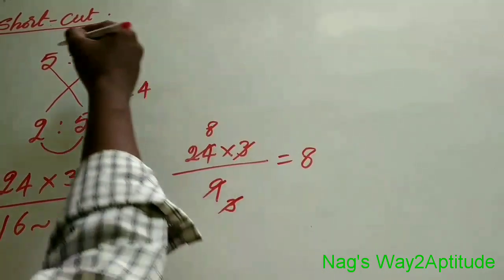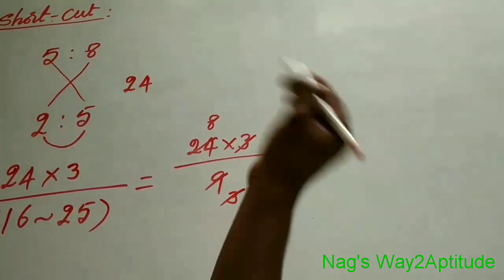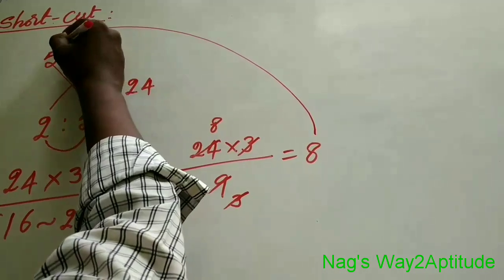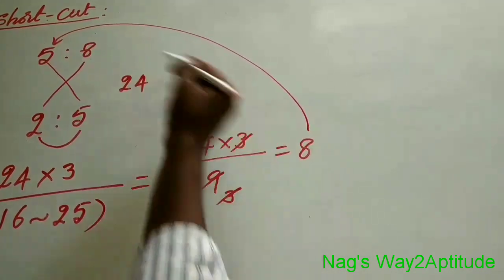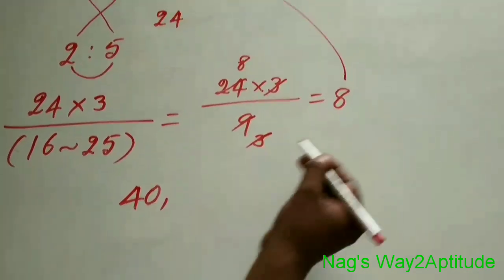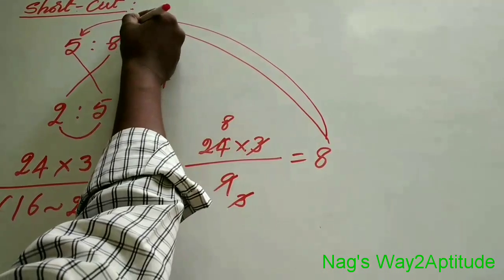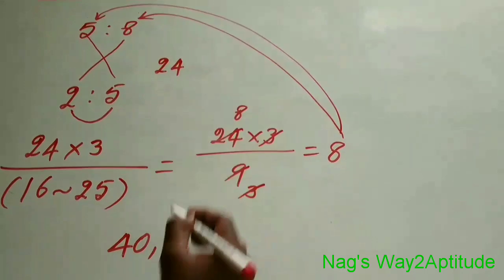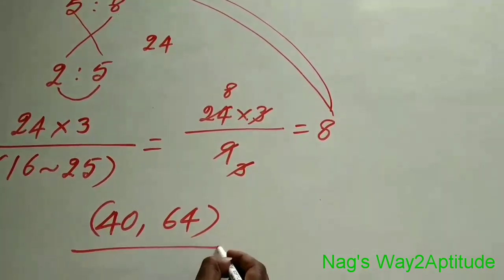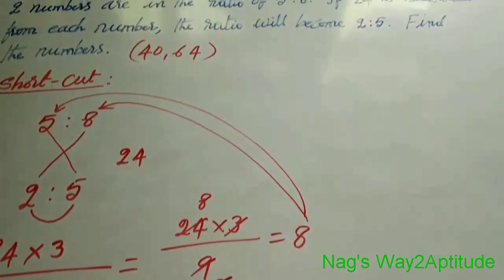Now you multiply these two original ratio terms with 8. Then you will get the answer. So 8 into 5: 8 fives are 40. And 8 into 8: 8 eights are 64. So the numbers are 40 and 64.